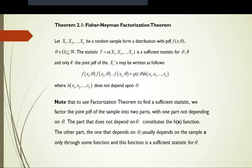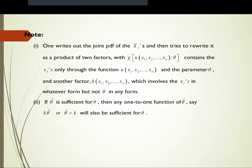To use the Factorization Theorem in finding a sufficient statistic, we factor out the joint PDF of the sample into two parts. The part that does not depend upon theta constitutes the h(x) function, while the other part that depends on theta also usually depends on the sample x only through some function, and this function is the sufficient statistic for theta. We write the joint PDF of the xi as a product of two factors: function g contains the xi only through the function u(x1, x2, ..., xn) and parameter theta, while the other factor involves xi in whatever form but not theta.